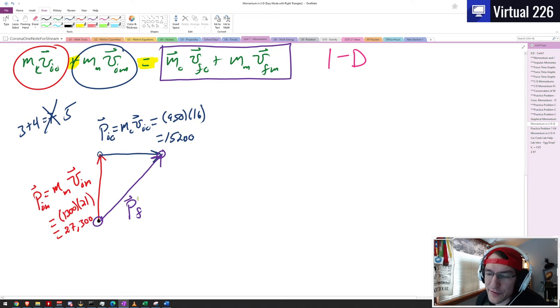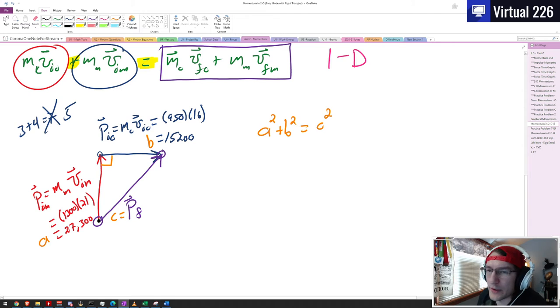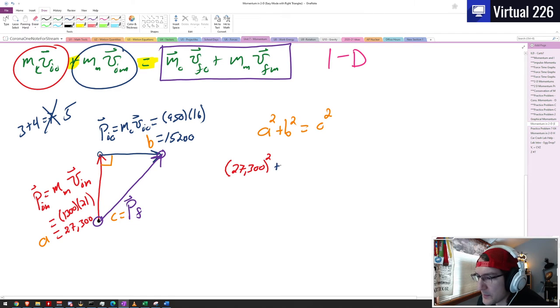If we want to find this final momentum first in order to allow us to eventually get the speed that the cars are moving after the collision and the direction, we do need this final momentum. And the easiest way to do that is to recognize that this is a nice right triangle. The van's moving up and down, the car's moving left and right. With the right triangle we can say that the red vector is side a, the blue vector is side b, and our final momentum is side c. And this allows us to use a Pythagorean theorem: a squared plus b squared equals c squared. So if we go ahead and actually plug in values here, these numbers are going to be big, but that's fine because we got calculators. So we can say 27,300 squared, woof that's big, plus 15,200 squared.